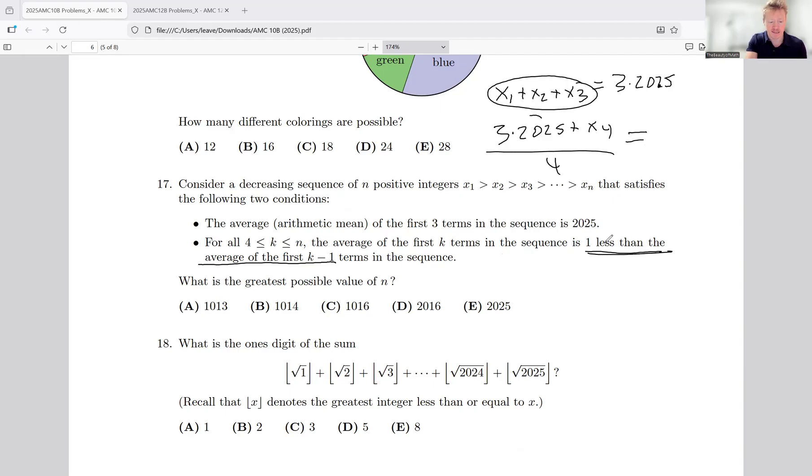That's going to be equal to one less than the average of the first three terms in the sequence, which we already know was 2025. They told us here, so this must be 2024. Now what you'll do is you'll multiply by 4 and you're going to have 3 times 2025 plus x sub 4 equals 4 times 2024.